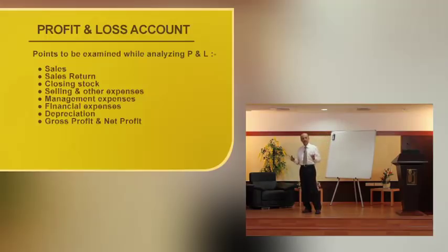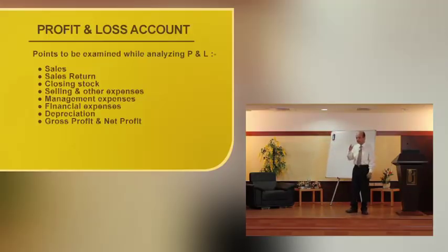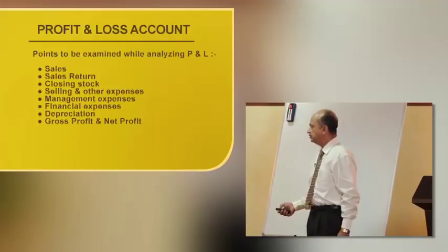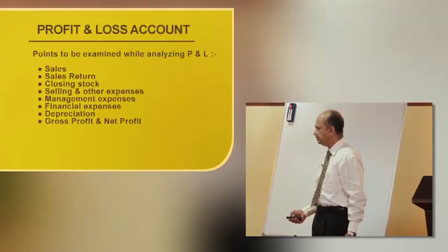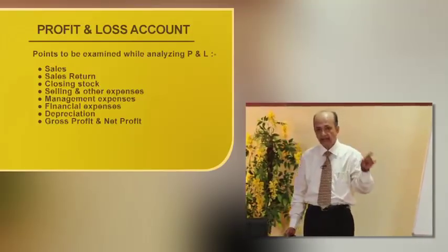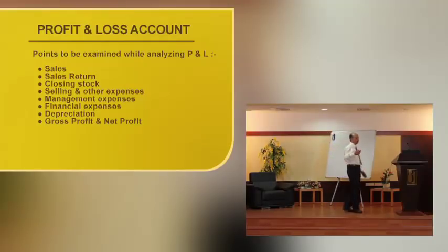Then depreciation, whether the methods are proper, whether it is as per the standard methods, the straight line method or other method, they are used properly or not. Then gross profit and net profit. That is a final conclusion so far as profit and loss is concerned. Whether the unit is making the profit, what is the net profit, what is the percentage of profit, what is the profitability. If profitability is on the increasing trend, that means the unit is faring well. These are the areas which we talked, that is sales, sales return, closing stock, selling and expenses, management expenses, financial expenses, depreciation, gross profit and net profit. These are the major areas which are being looked into, which are being examined by the banker while processing the credit proposal or while considering any enhancement in the exposure or credit.